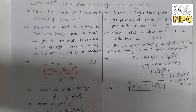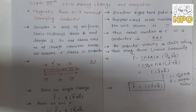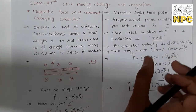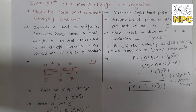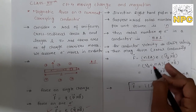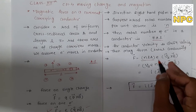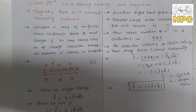So this formula — putting the total number of electrons — gives: n, L, A into e, where e is the charge per electron. This formula gives you the total force on a current-carrying conductor whenever it is placed in a magnetic field. Here, e is the charge, n is the number of electrons per unit volume, A is the area of cross-section, and L is the length of this conductor.